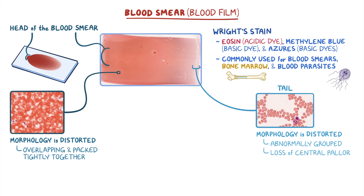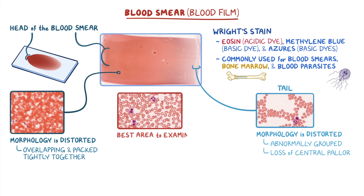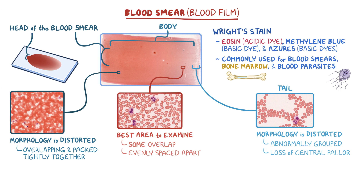As a result, the best area of the smear to examine is typically within the body of the smear, but further to the right, near the tail. This zone will have some cells that overlap, but the majority of the cells will be evenly spaced apart, allowing the cells to be easily counted and differentiated from one another.